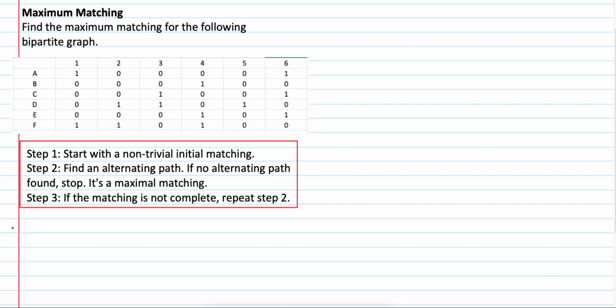Step 1, start with a non-trivial matching. So what we need to do is we just choose 1. A is 1. And then B, you have only 4.